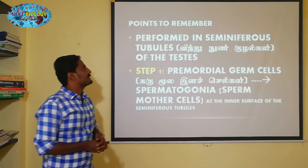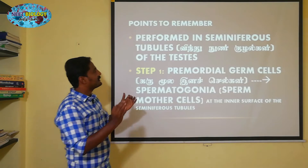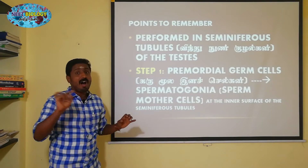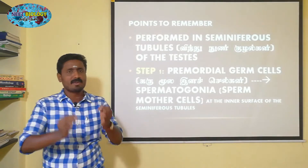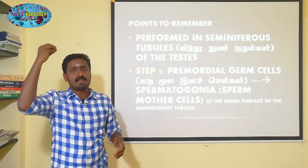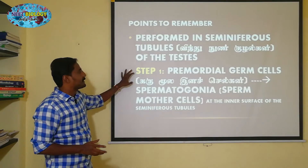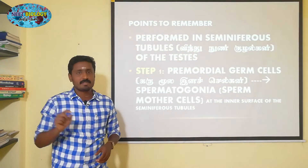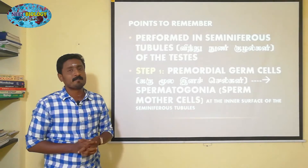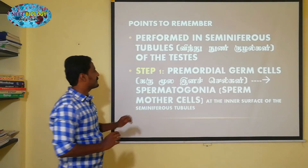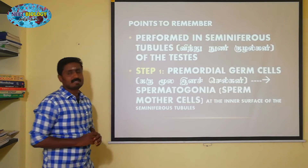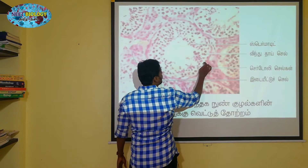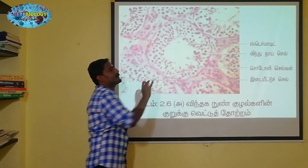Spermatogenesis is performed in the Seminiferous Tubules in the testes. In the outer layer of the tubule, there are primordial germ cells and epithelial cells. This is the epithelial layer, and there are primordial cells within it.